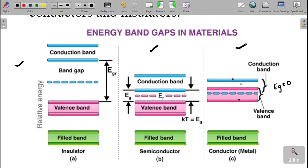For an insulator, the gap between the valence band and conduction band is very large, so conductivity is not possible — insulators do not conduct current. For a semiconductor, there is a very small energy gap between the valence band and conduction band. If you supply energy, electrons will move from the valence band to the conduction band. So a semiconductor lies between a conductor and an insulator in terms of conductivity.